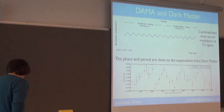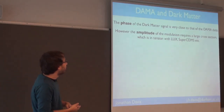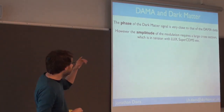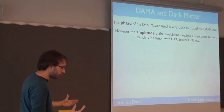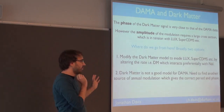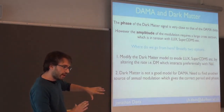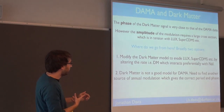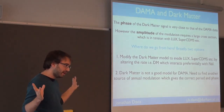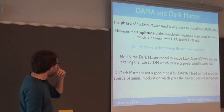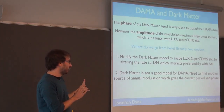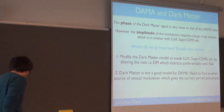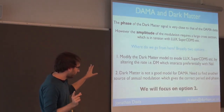DAMA does observe an annual modulation over a very long time — it's actually two experiments, DAMA/NaI and DAMA/LIBRA, a bigger more precise version, over about 11 years. The black line is the prediction from dark matter — the amplitude is fitted, but the phase and period are fixed from theory. It fits through all the points very well — a very good fit. However, the amplitude of the modulation requires a large cross-section which, in the basic elastic scattering model, is ruled out by LUX and CDMS-II. So you have two choices: modify the dark matter model, or find another source of annual modulation.